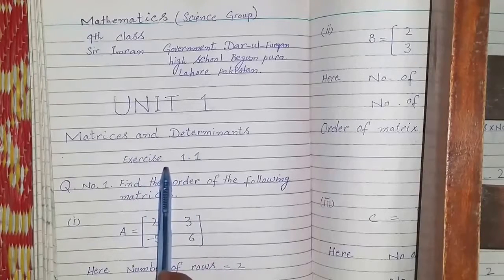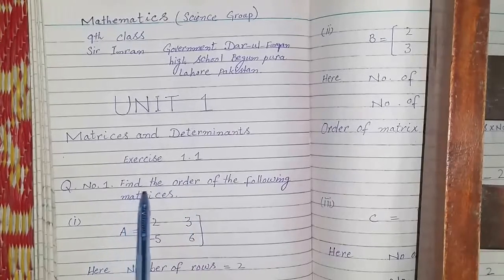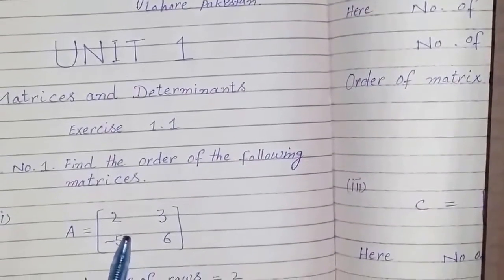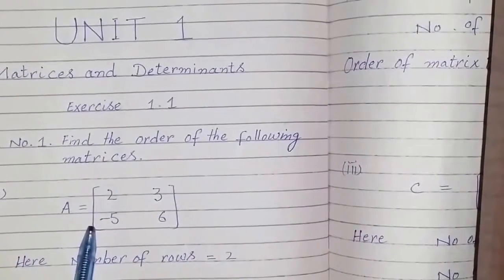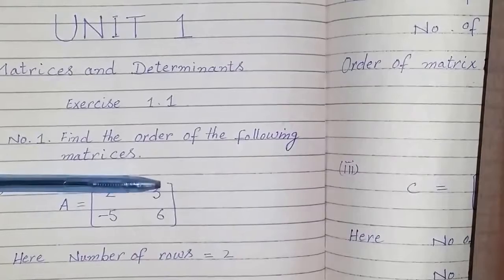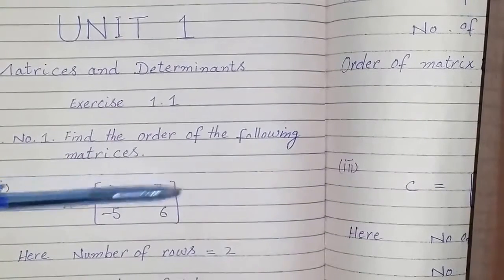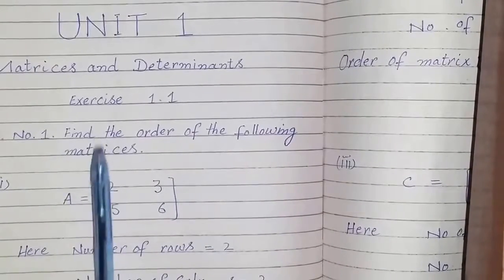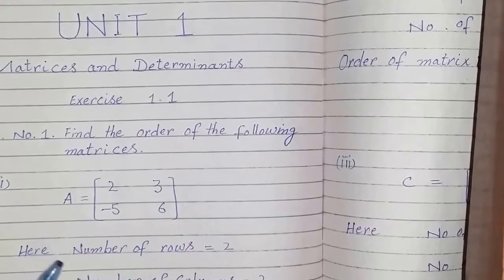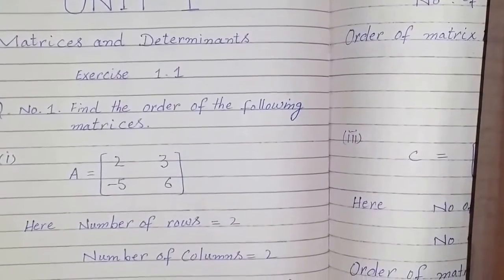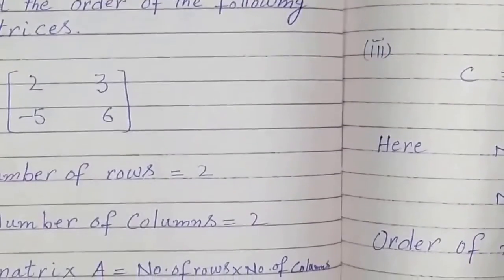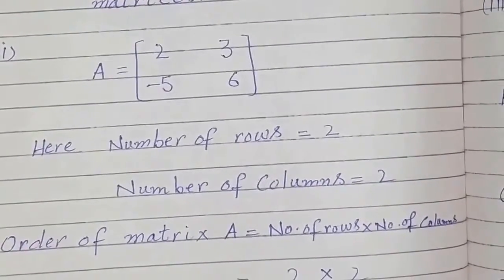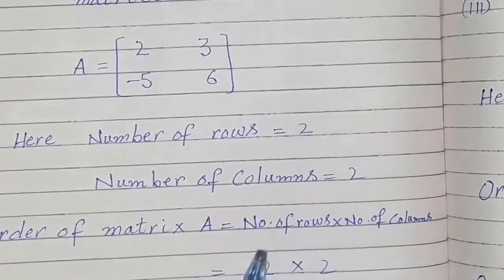Here is Exercise 1.1, Question number 1: Find the order of the following matrices. For this matrix, we can see that it has 2 rows — this is row 1 and this is row 2 — and 2 vertical columns. So the number of rows is 2 and the number of columns is 2. The order of matrix A is written as number of rows multiplied by number of columns, that is 2 times 2.